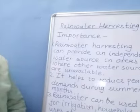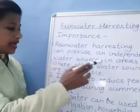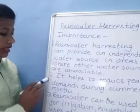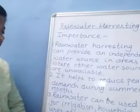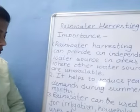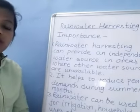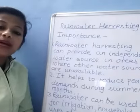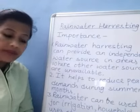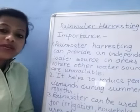Why rainwater harvesting is important — why this is a need for current time. Rainwater harvesting can provide an independent water source in areas where other water sources are unavailable. Number two, it helps to reduce peak demands during summer months. Number three, rainwater can be used for irrigation, household uses, etc. For storing rainwater, we can dig a pit, well, or dams where the rainwater can be collected.